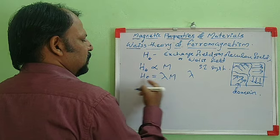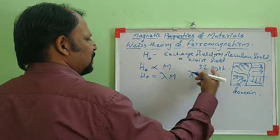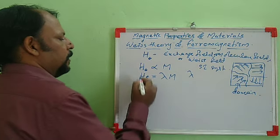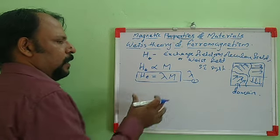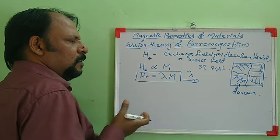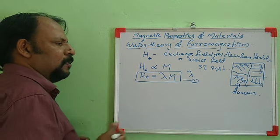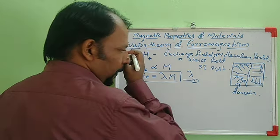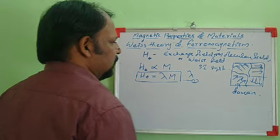In SI units, H and M have the same dimensions, so λ is a dimensionless quantity. It is a constant independent of temperature. The exchange field has a magnitude of the order of 10^7 Gauss in iron, which is very high compared to the external magnetic field we apply. So this field is called the exchange field.